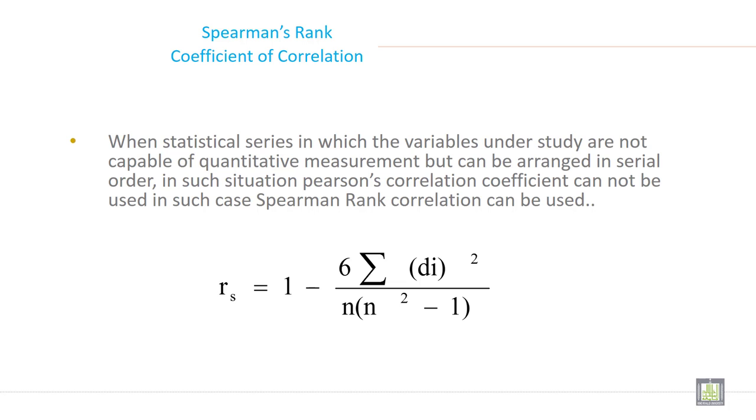Spearman Rank Correlation: when a statistical series in which the variables under study are not capable of quantitative measurement but can be arranged in serial order, in such situations Pearson correlation coefficient cannot be used. In such cases, Spearman Rank Correlation can be used.